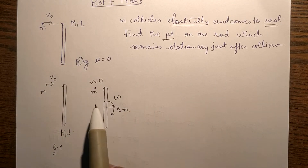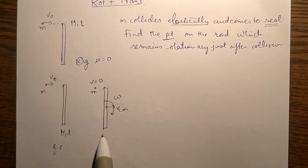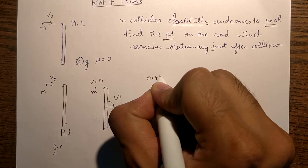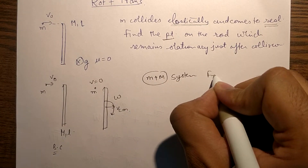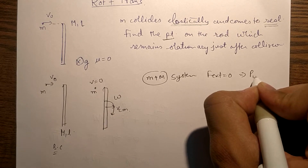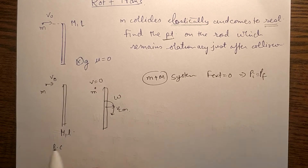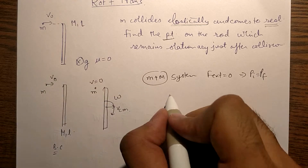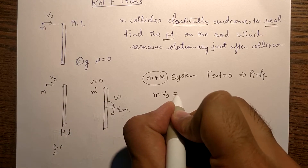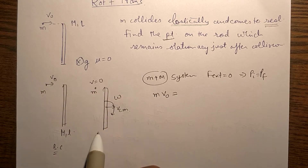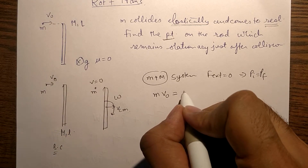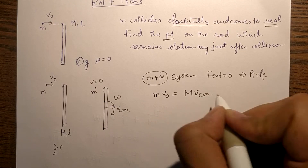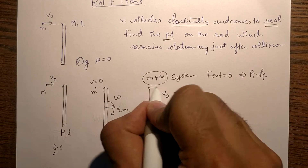Whenever the axis of rotation is not fixed, the body tends to rotate about its center of mass. If we take small m and capital M as a system, there is no external force acting on it, so initial momentum must equal final momentum. Initial momentum is due to small m only: m × V₀. Finally, small m comes to rest, so the rod's linear momentum is M × Vcm. This is our first equation.